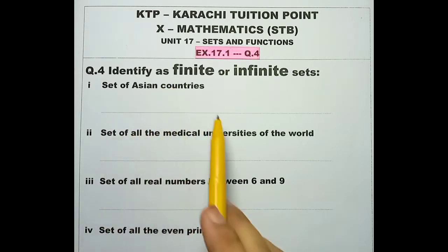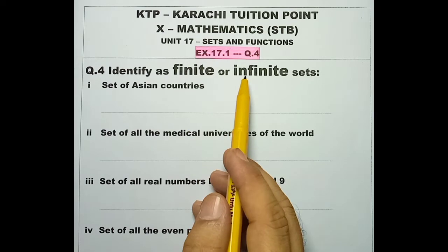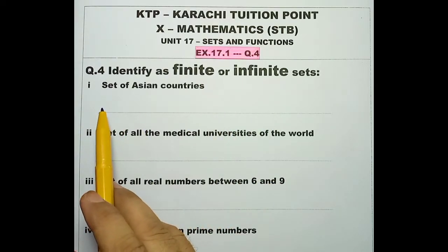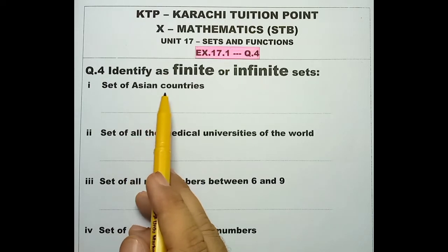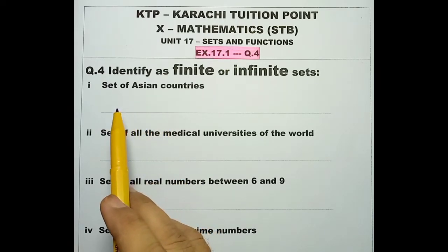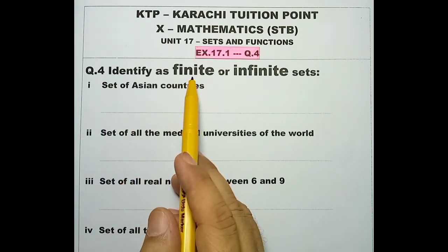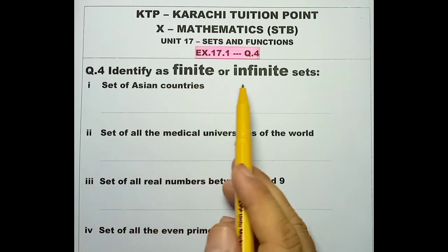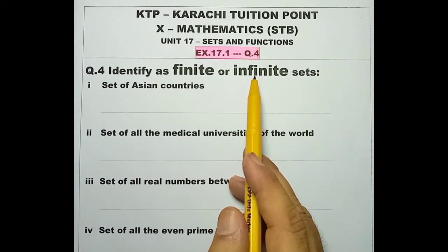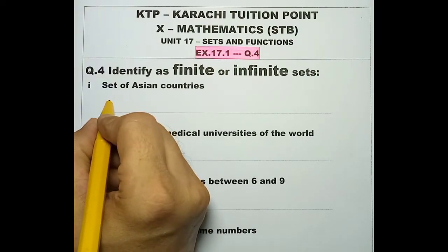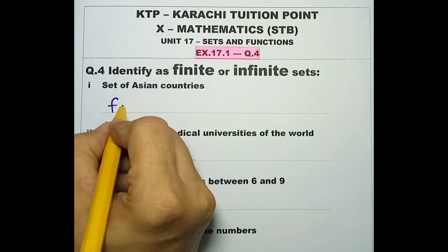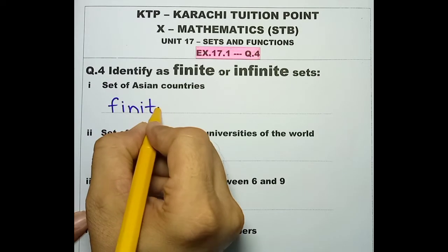We have to identify whether the following sets are finite or infinite. Number 1: set of Asian countries. Dear friends, Asian countries — we can count them, we can make a list, they are limited. Finite means limited and countable, and infinite means uncountable and limitless. So, the set of Asian countries is a finite set.